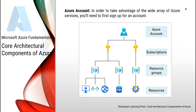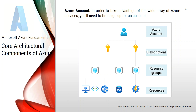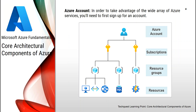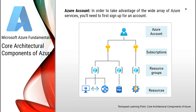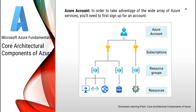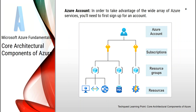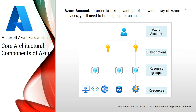An Azure free account includes access to 20 Azure products free for 12 months, access to additional products that are always free, and a $200 credit to spend during your first 30 days. If you work for a large organization, you may be able to purchase access through a Microsoft representative or through a Microsoft partner. You can also purchase access directly through Azure.com with pay-as-you-go pricing, where you pay only for what you use each month with no upfront commitment and you can cancel at any time.